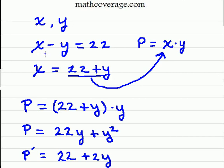The problem asks us to find two numbers whose difference is 22 and that their product is a minimum. We set this up as x minus y equals 22 and P, the product, is equal to x times y.